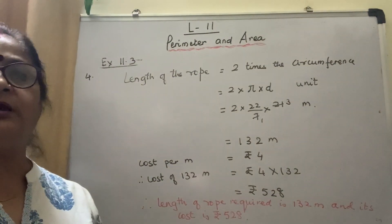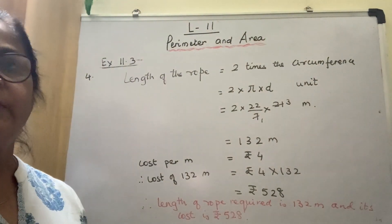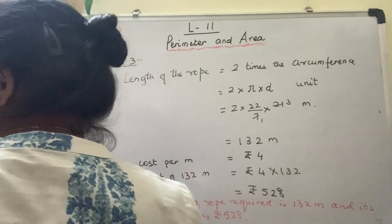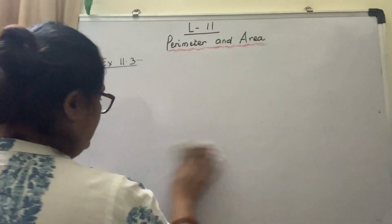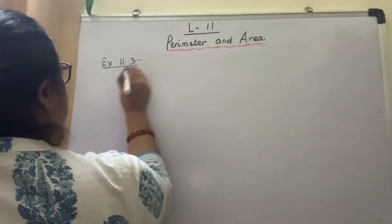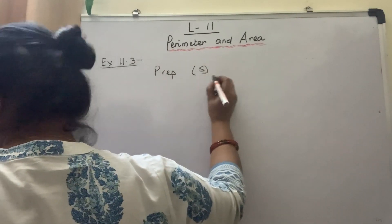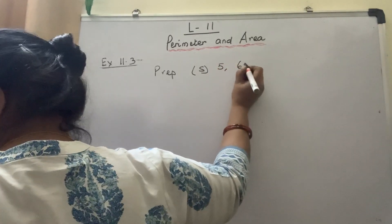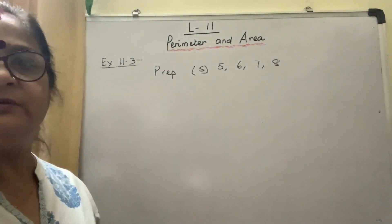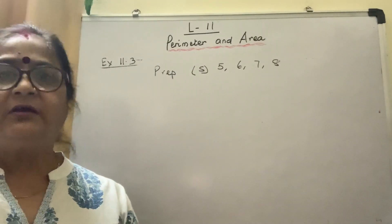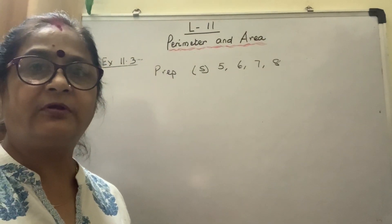Now do all four questions in your classwork book very neatly. Draw a line and then do your work. Today's prep will be exercise 11.3, sum numbers 5, 6, 7 and 8, which we will discuss tomorrow. That's all for today. Goodbye and have a nice day, children. Please write the answers in your classwork book. Thank you.